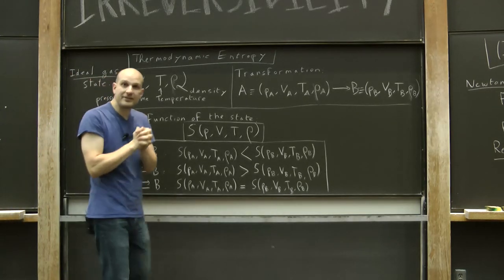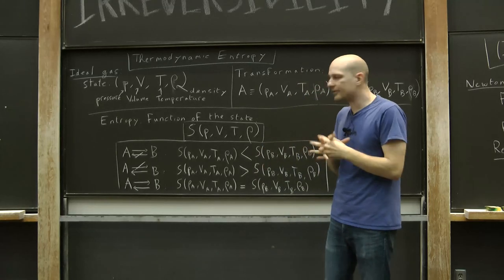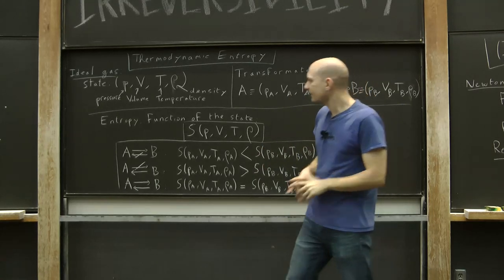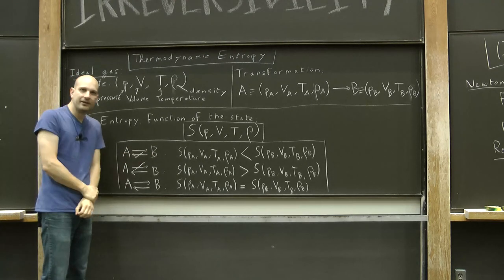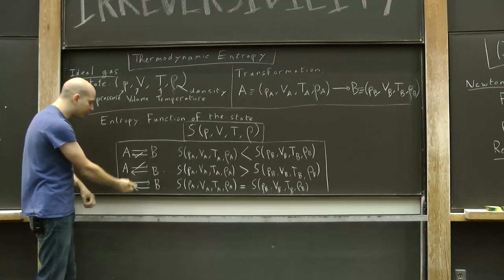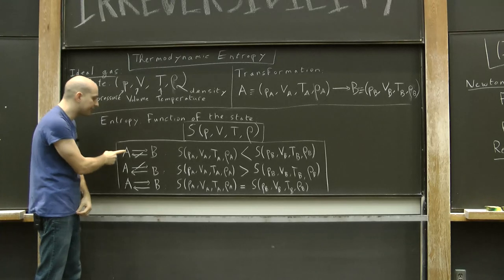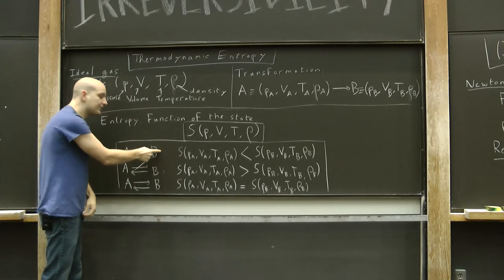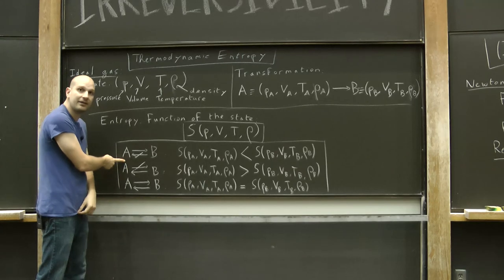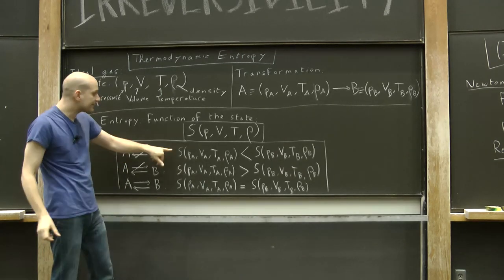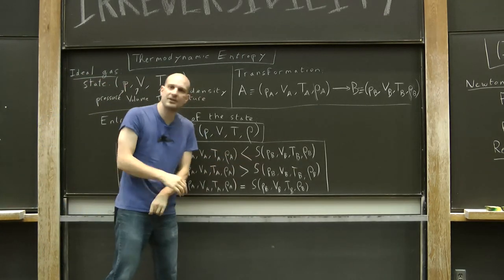How do we define this function? Well, we define it from the irreversibility. Considering all possible pairs of states A and B, there are three different kinds of situations. Either it is possible to get from state A to state B but not back from B to A. In that case, the entropy of state A is smaller than the entropy of state B.